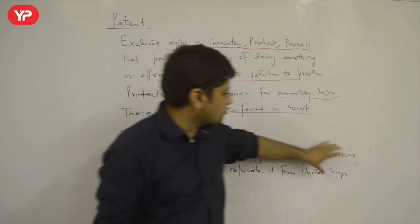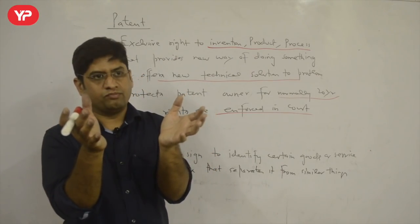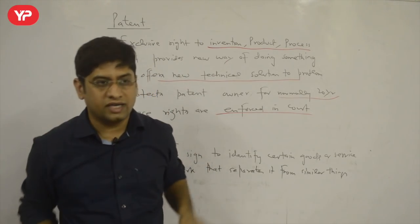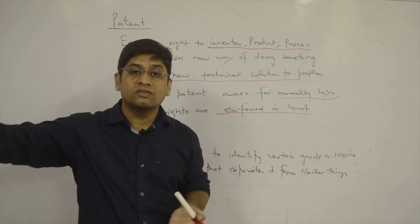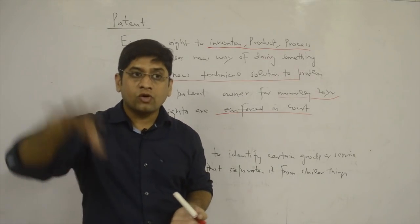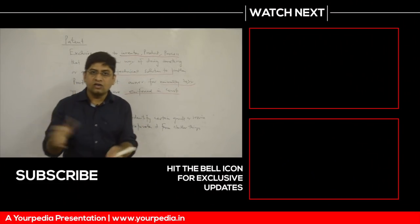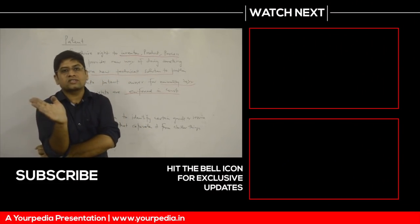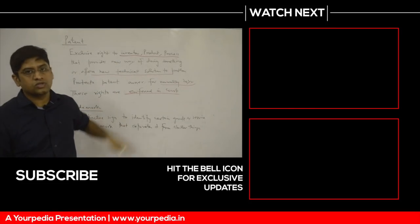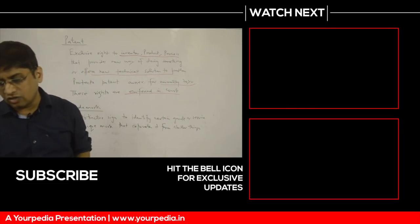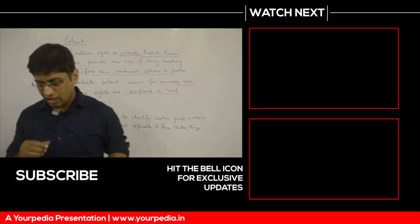Trademark means that if you have made a service, goods, or product — like a bag or Maggi — there will be a symbol on it. The mark you put on a product is to differentiate it from other similar products. Many similar products exist, but your trademark distinguishes yours from the rest. That is the meaning of trademark. Similar concepts include geographical indicators and copyright, which will also be discussed further.